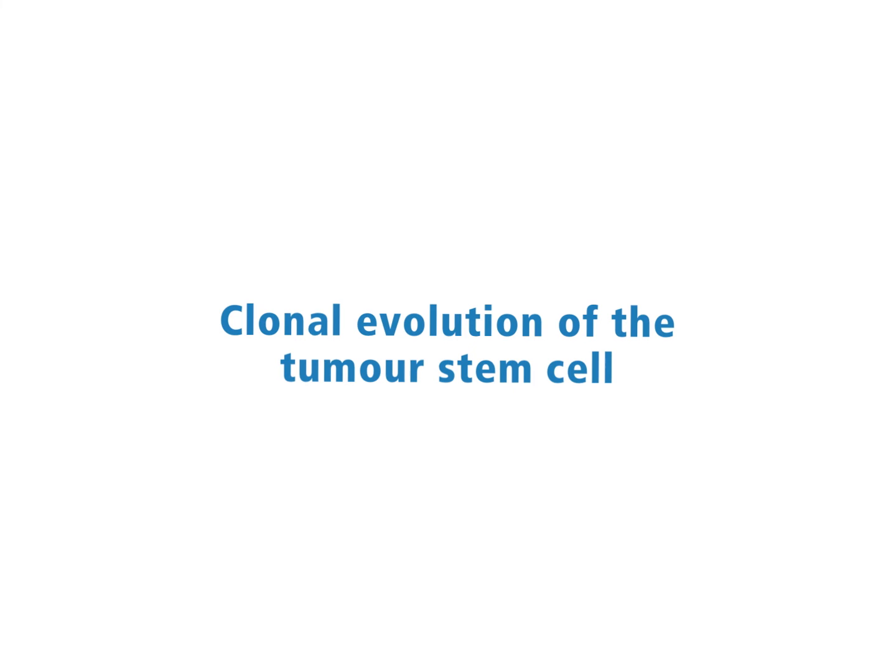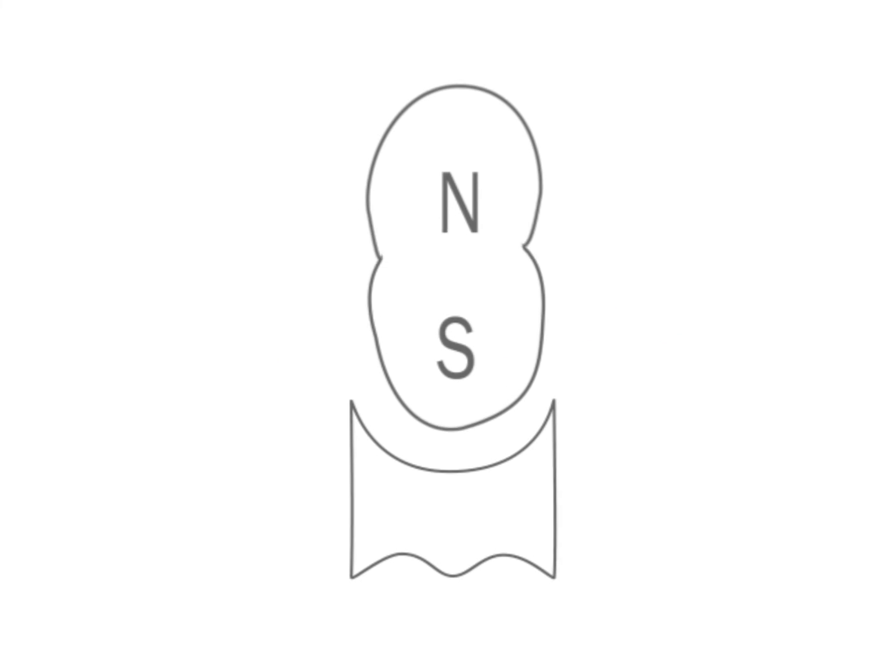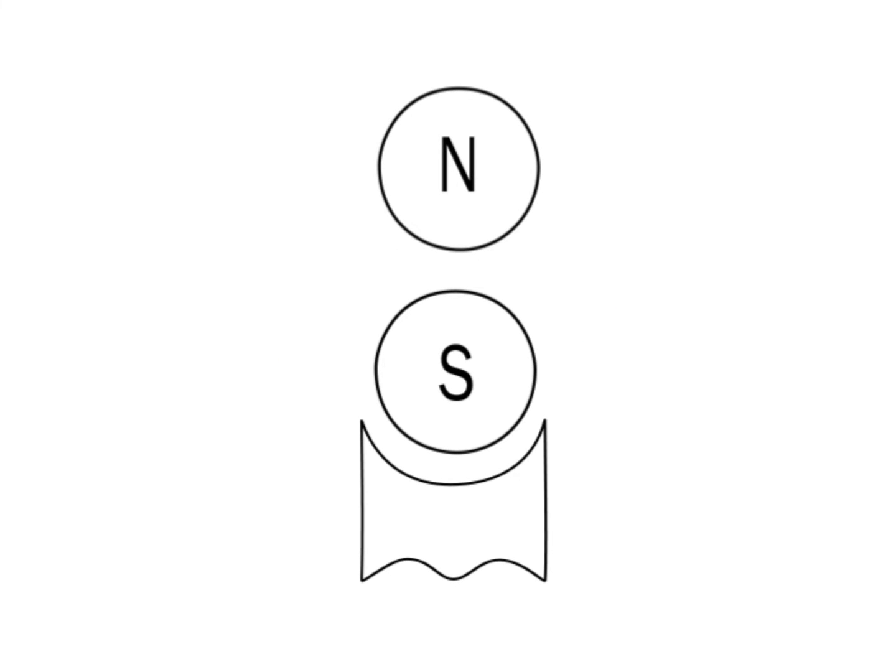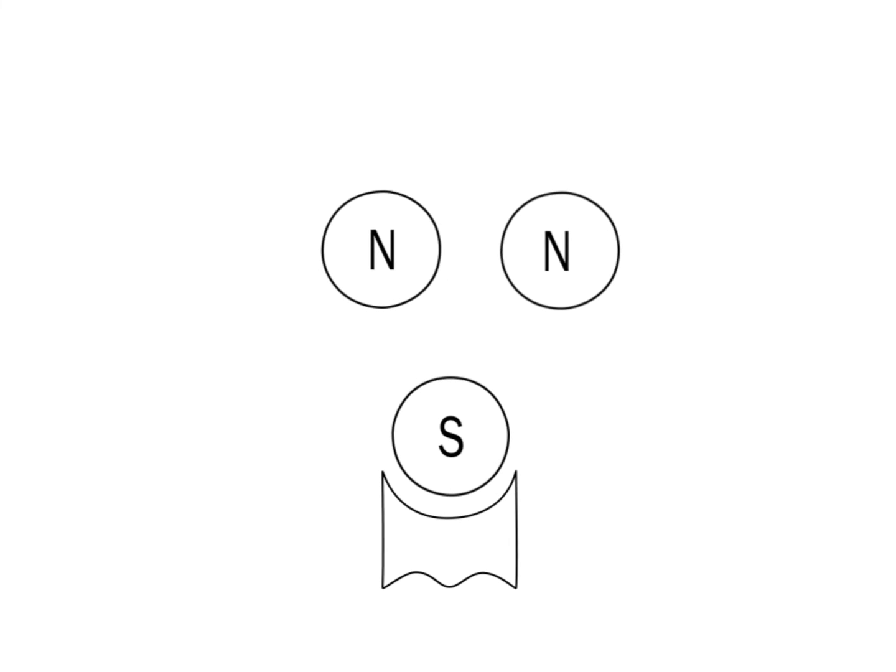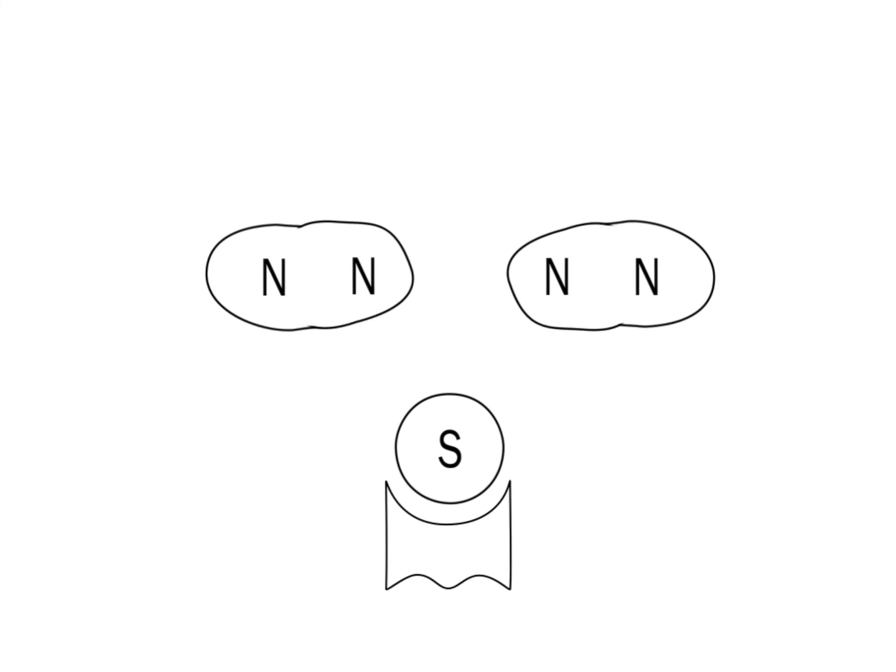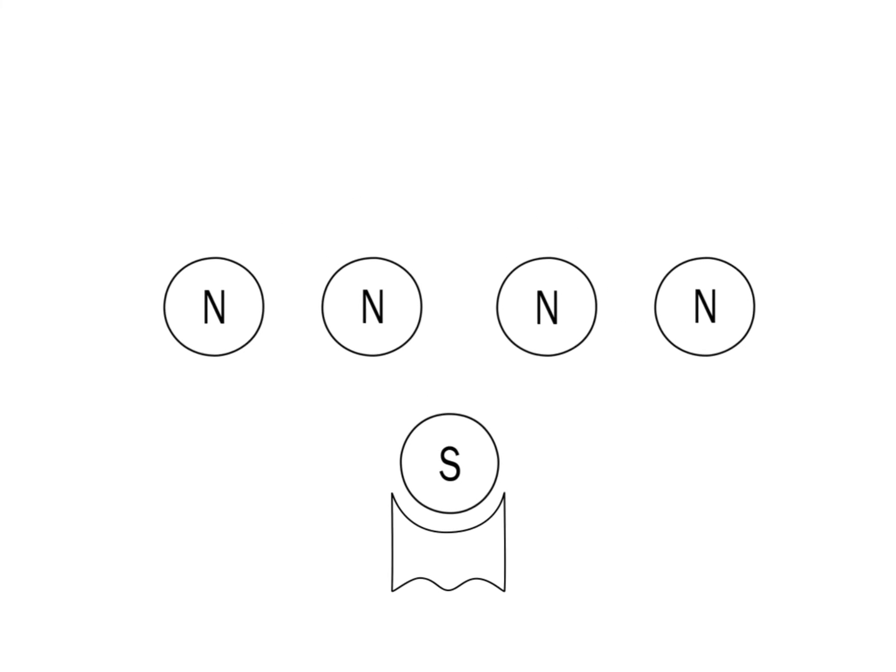Asymmetric cell division means that one of the two daughter cells remains a stem cell, whereas the second daughter cell divides further. The resulting cells differentiate into different lineages. Asymmetric cell division is guided by the so-called niche, shown here beneath the stem cell. As a result of asymmetric cell division, one daughter cell remains a stem cell and the second cell undergoes a number of cell divisions.